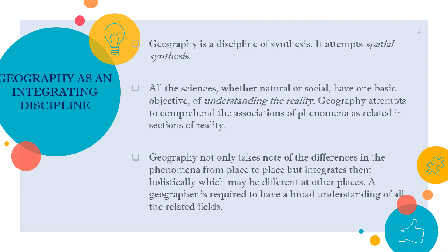Here we see spatial synthesis — region to region — and we work on all of them in an integrated or holistic way. Through geography we get to know what is happening in the whole earth, what is happening in the sciences, whether natural or social sciences. This helps us understand reality, and what geography does is study and link these to tell us what is happening in reality.